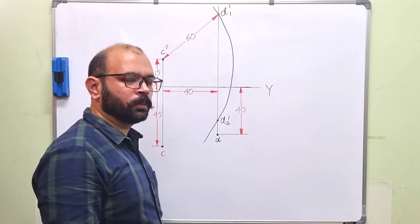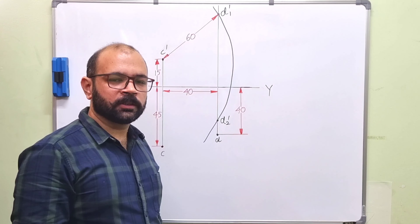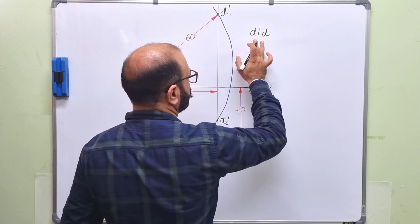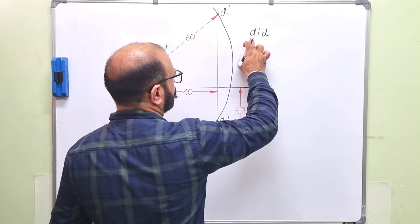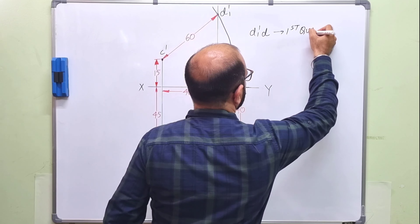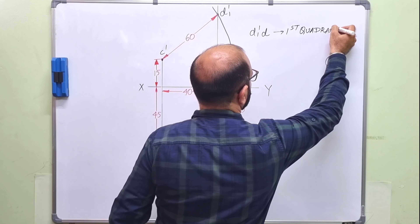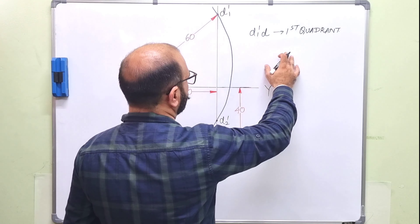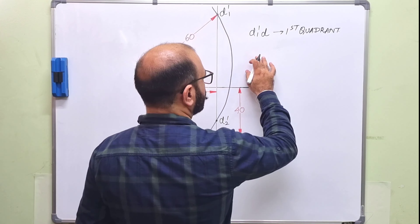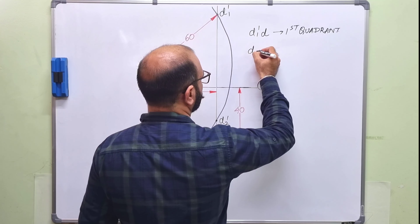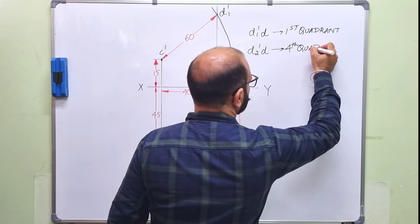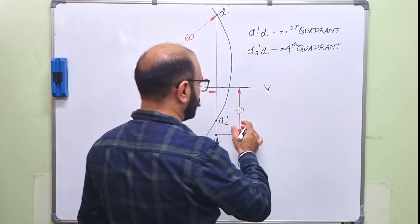According to this question, there are two possibilities for the quadrant in which point D lies. If we consider D1' and the top view D together — front view above XY, top view below XY — point D is in the first quadrant, as it is above HP and in front of VP. If we consider D2' and D, both the front view and top view are below the XY line, so point D is in the fourth quadrant.